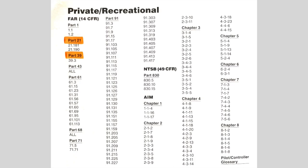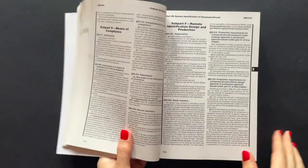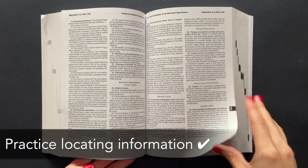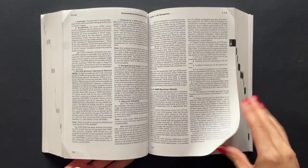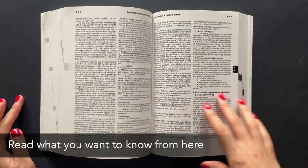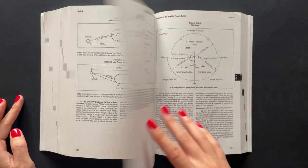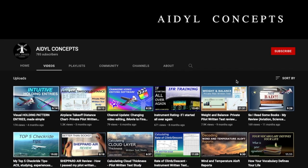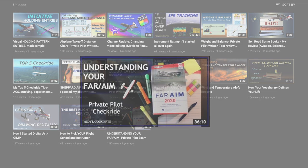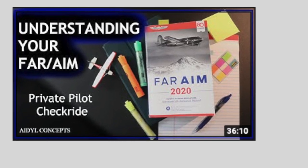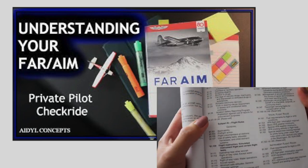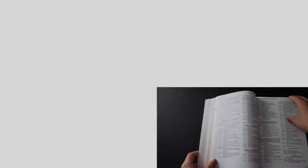Most items listed on the study list are very relevant for reviewing even as a certificated pilot. Another benefit of using this list is that it's good practice to look up information within this book, because being able to locate and identify reliable sources of information is a very helpful skill as a pilot. If at the end of the video you'd still like more practice navigating the FAR/AIM and discussing the regulations, consider checking out the first video posted on this channel: 'Understanding Your FAR/AIM.'